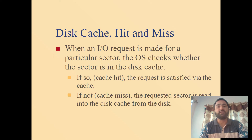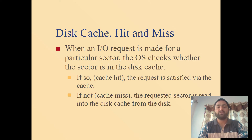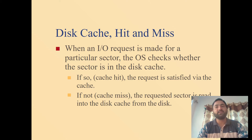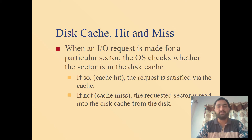If the sector is not available in the cache memory, it is called a cache miss, and that sector has to be read from the disk. In the case of a cache miss, the requested sector is read from the disk into the disk cache first, and from the disk cache the data is then accessed by the system or process.